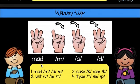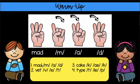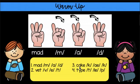Now let's do some three-letter and even four-letter, but three-sound words. M-a-d. Mad. V-e-t. Vet. K-a-k. Cake. T-i-p. Type.